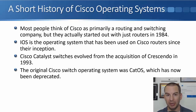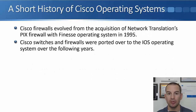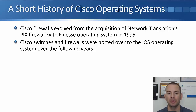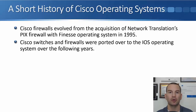The original operating system on the Catalyst switches was CatOS, but that's been deprecated quite a long time ago now. Cisco firewalls evolved from another acquisition — the acquisition of Network Translation back in 1995. Cisco got their PIX firewall from that, which uses the Finesse operating system. Both the Catalyst switches and originally the PIX firewalls — it's now the ASA firewall — were ported over to the iOS operating system over the following years. So Cisco standardized on iOS for all of their network infrastructure devices.